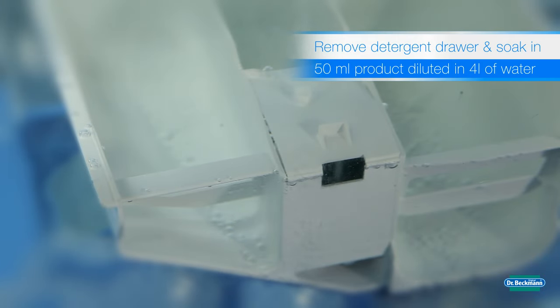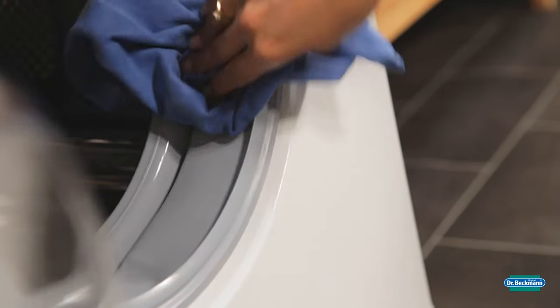Simply dilute the liquid to soak the detergent drawer or use neat to wipe around the rubber seal to keep it smooth and flexible.